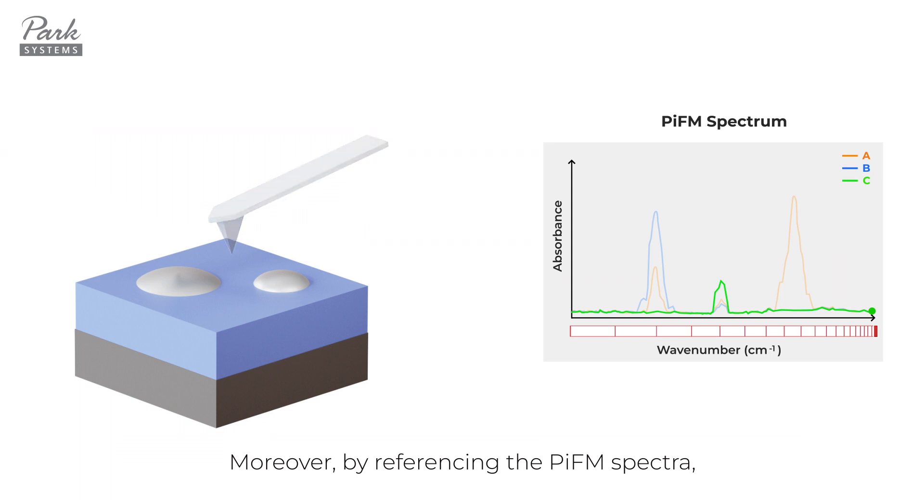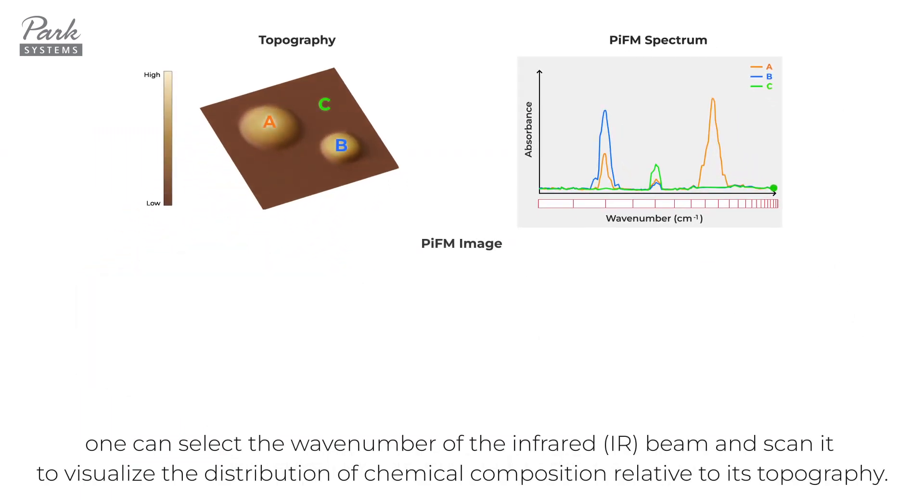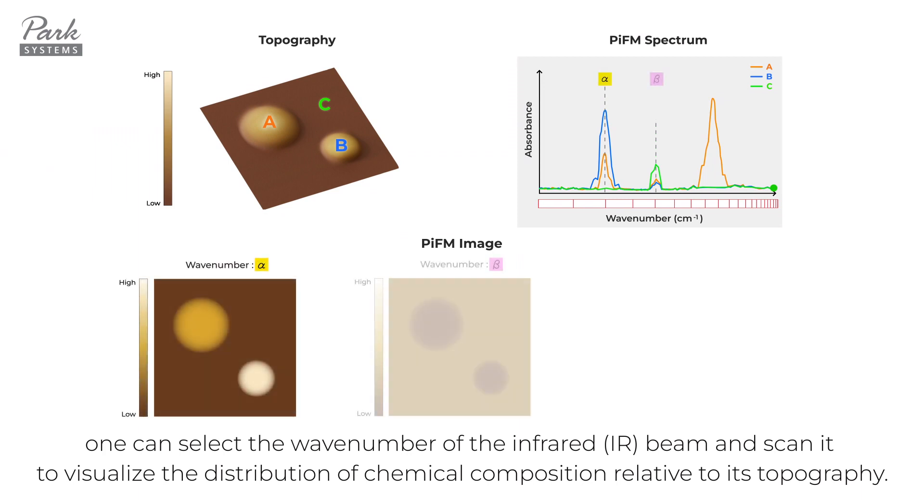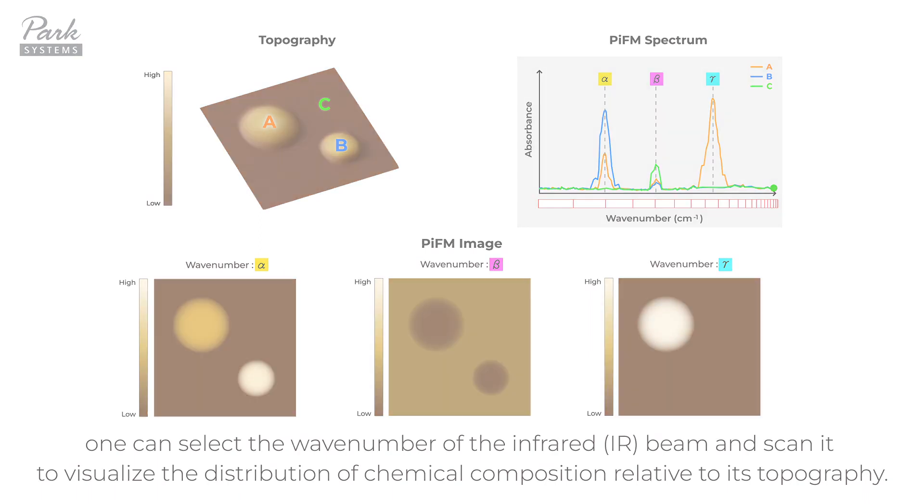Moreover, by referencing the PIFM spectra, one can select the wavenumber of the infrared beam and scan it to visualize the distribution of chemical composition relative to its topography.